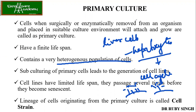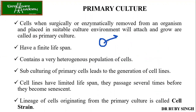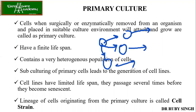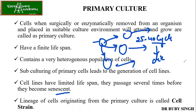Cell lines have a limited lifespan — they passage several times before they become senescent. If you have established a primary culture, it will go through only 25 to 40 cycles, and after that the cells die. The lineage of cells originating from a primary culture is called a cell strain.